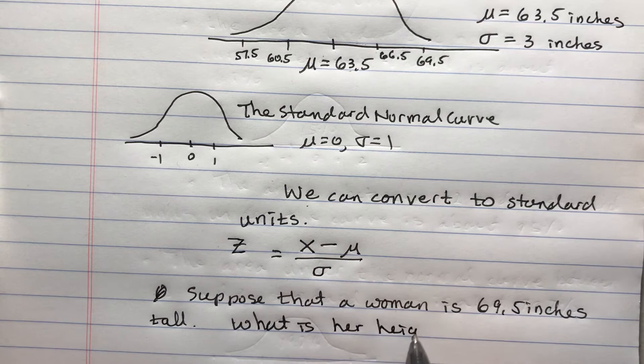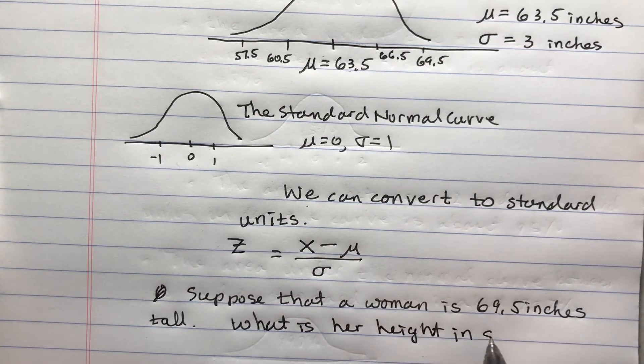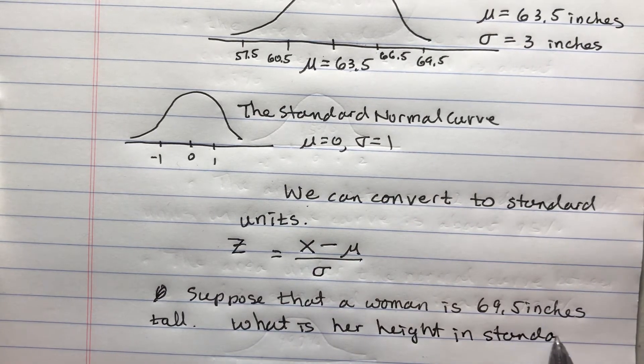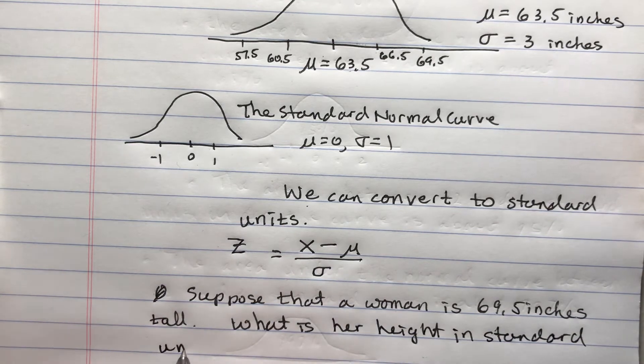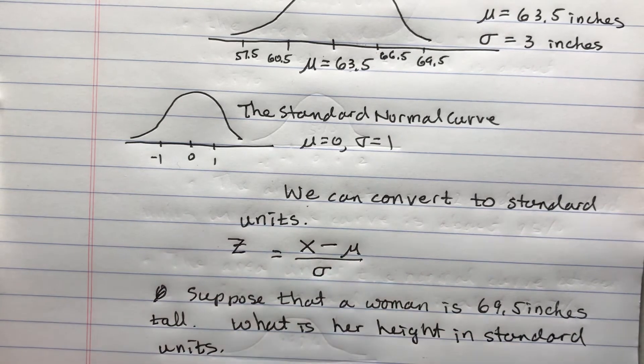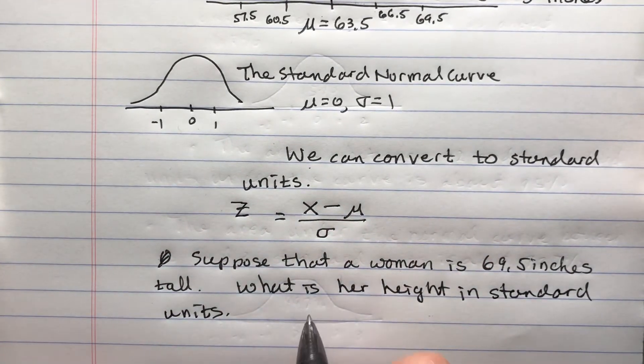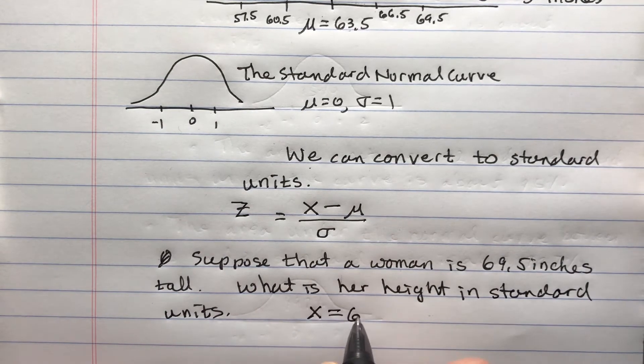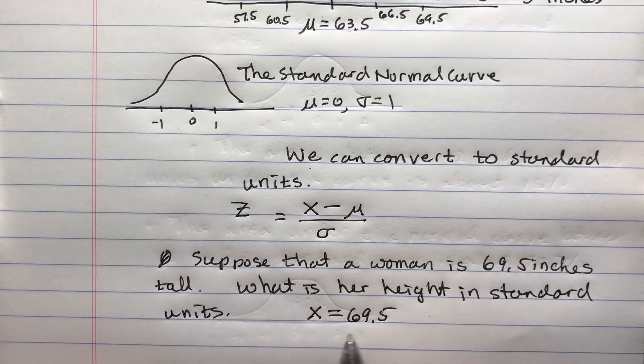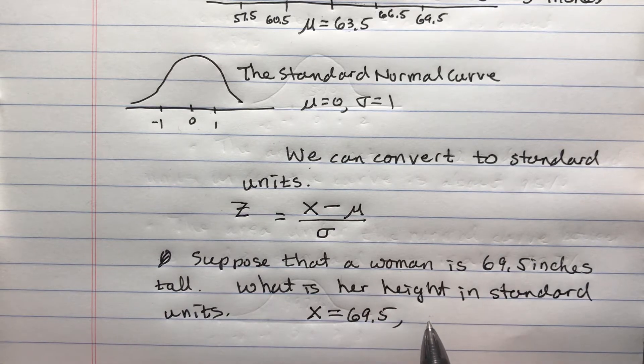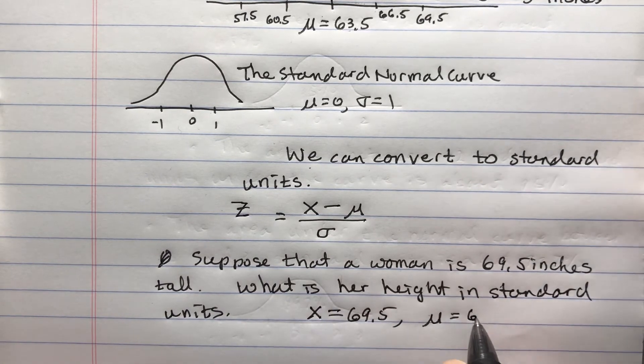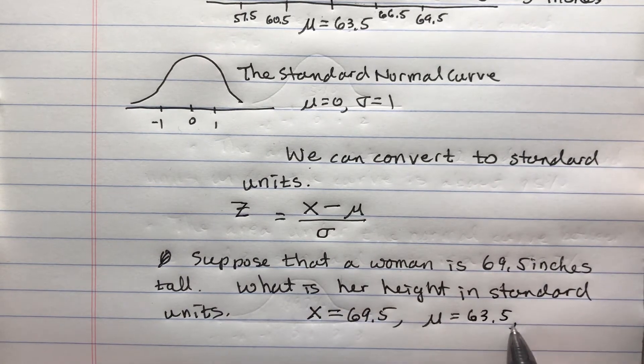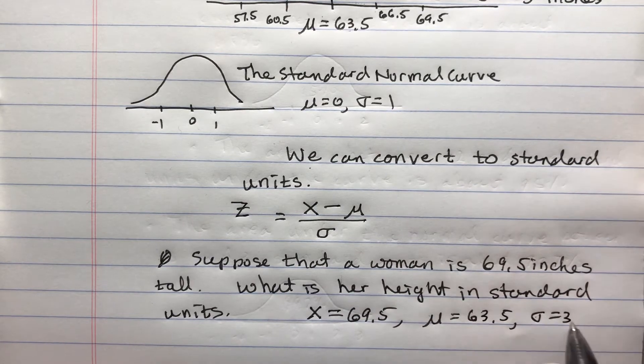What I can do is use this formula. Let me explain it without just using the formula. We have x is 69.5, mu is 63.5, and sigma is 3.